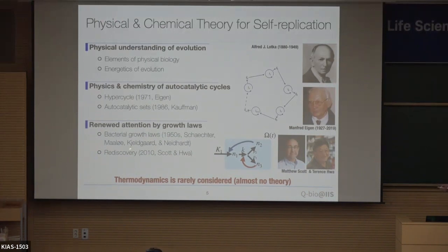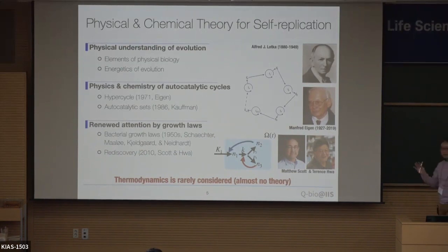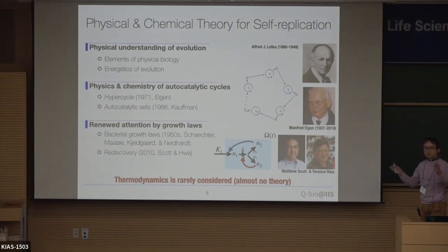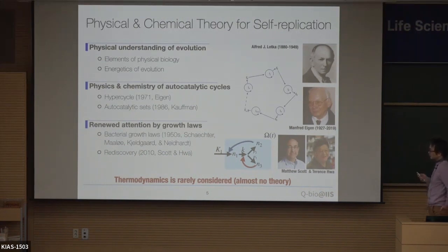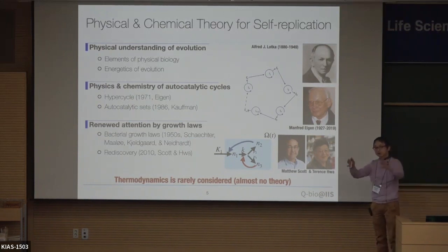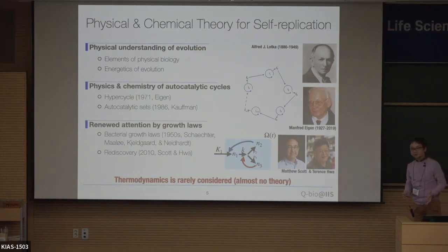Motivated by these experimental observations, many physicists and theoreticians now construct self-replicating reaction systems. However, most of this work focuses on the autocatalytic cycle mainly, and the problem of compartmentation or space is largely ignored. As far as I know, we have almost no theory for thermodynamics that considers both the reaction and the change in the size of the system. If you know of such work, please let me know — I would be very happy to learn about it.